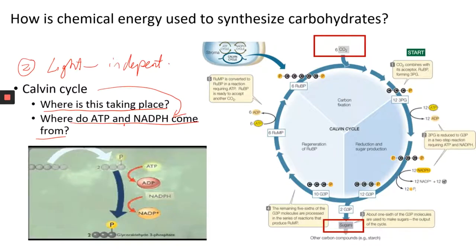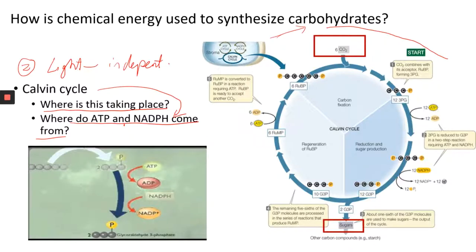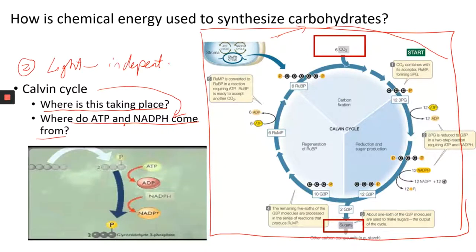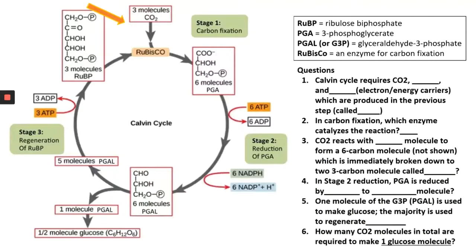The Calvin cycle is a cyclic reaction — things start, go through the cycle, and come back to make more glucose. There are a lot of intermediate products involved. You need to be able to use the information in the graph and talk about the process. The process starts with carbon dioxide as the reactant, and there is an enzyme that catalyzes the first reaction.